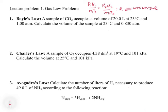We're going to apply this universal gas law to a couple of different examples. We're going to look at Boyle's and Charles' law — the Avogadro you can do on your own. With Boyle's law, a sample of CO2 occupies a volume of 20 liters at 23 degrees Celsius and 1 atmosphere. Calculate the volume of the sample at 23 degrees Celsius and 0.830 atmospheres.